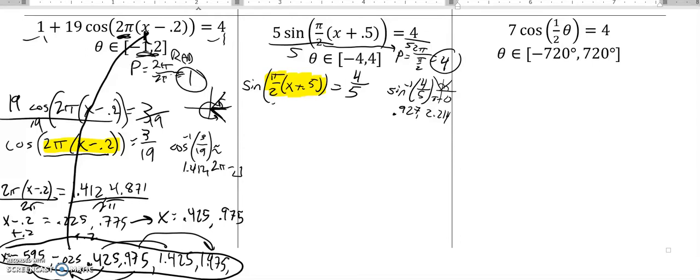Now those aren't my answers. Those are what this is equal to. So this π over 2 times x plus 0.5 is equal to—it's not really exactly equal to, I'm going to say it's about—because I rounded 0.927 and 2.214.